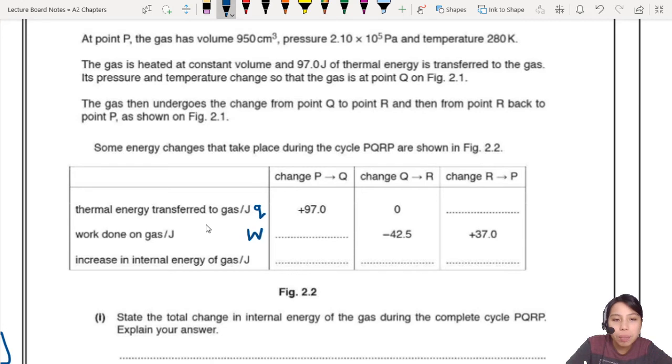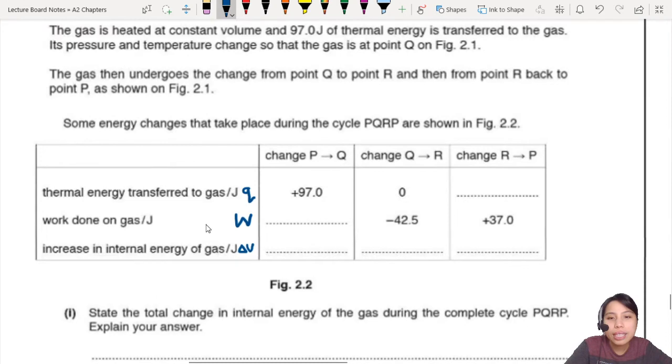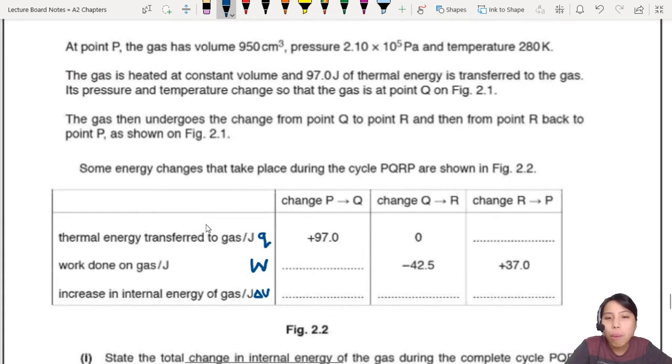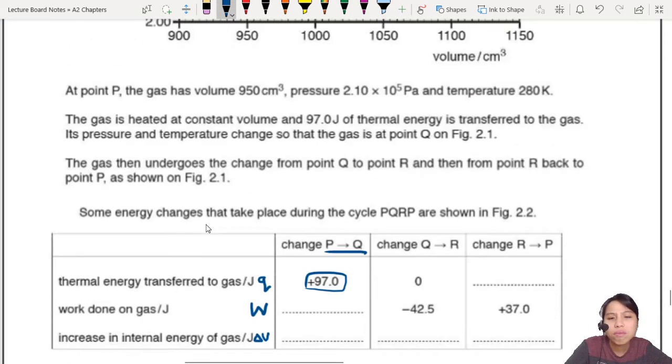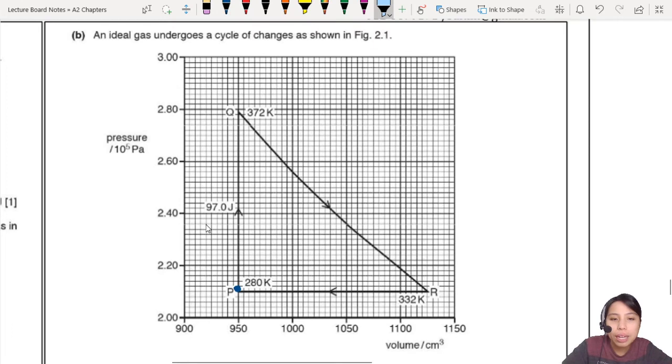This table is your UQW table. So for each state, you have to find the thermal energy transfer, the Q, the work done W, and the increase in thermal energy, internal energy, which is delta U. So we have to look at each stage to complete the table. Let's look at the first one, P to Q. Thermal energy is transferred. What's the work done on the gas?